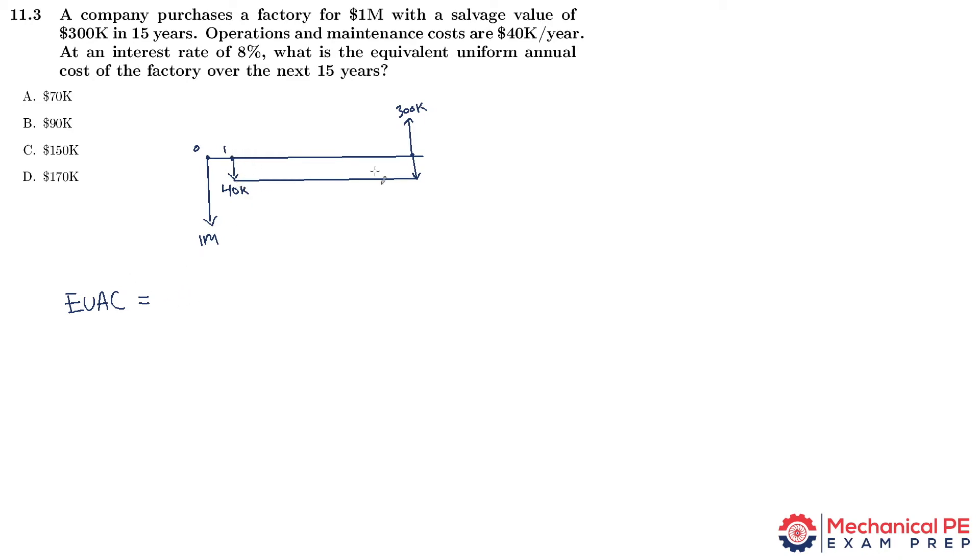The $40,000 is already annualized, so that's positive because it's a cost. The million is also positive, but needs to be converted from a present value into an annualized value. We can look up in the reference handbook factor table and find the economic factor table for 8%. We're going to multiply by the factor A over P, taking a present value and turning it into an annualized value at 8% for 15 years.